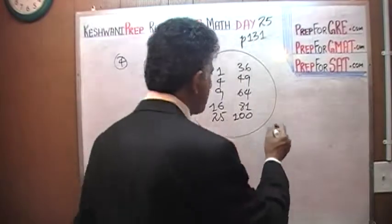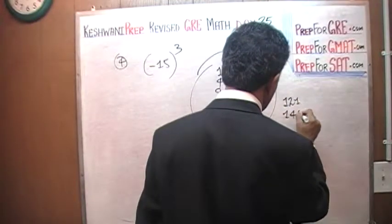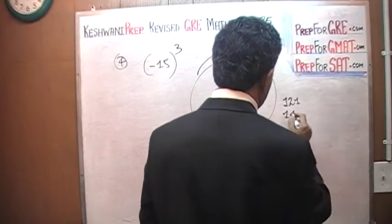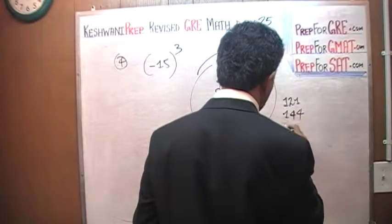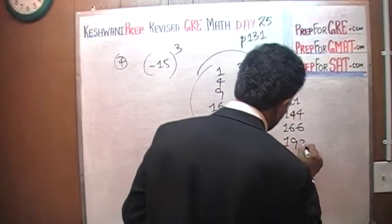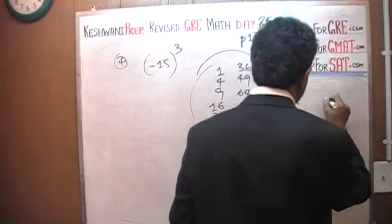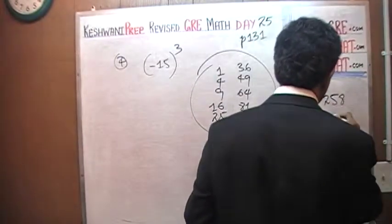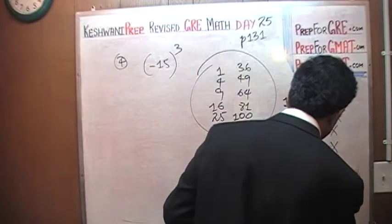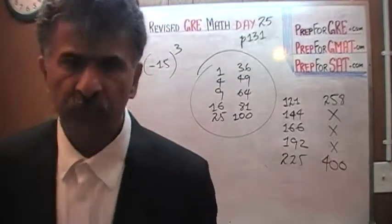Let's do ten more: 11 squared is 121, 12 squared is 144, 13 squared is 169, 14 squared is 196, 15 squared is 225, 16 squared is 256, and 20 squared is 400. You must know these squares by heart.